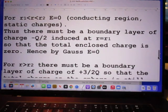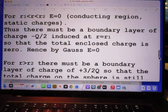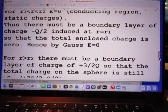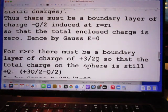For R smaller than R2 and larger than R1, electric field is zero because it is a conducting part of the sphere. Thus there must be a boundary layer of charge minus Q over 2, induced at R equals R1, so that the total enclosed charge in the Gauss surface is zero.